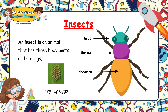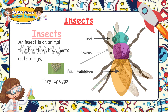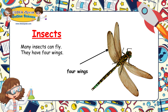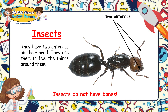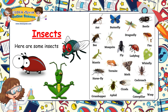Insects lay eggs. Many insects can fly — they have four wings. They have two antennae on their head, which they use to feel the things around them. Insects do not have bones.